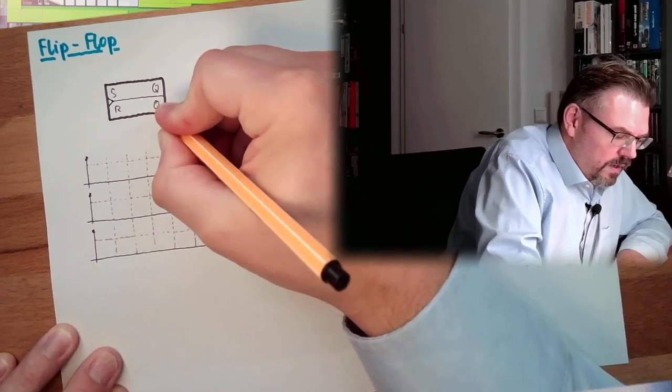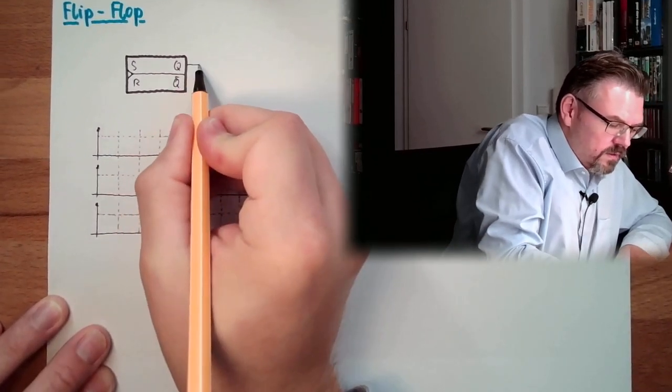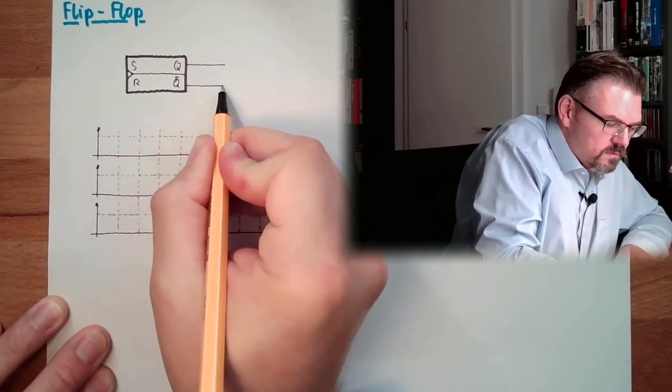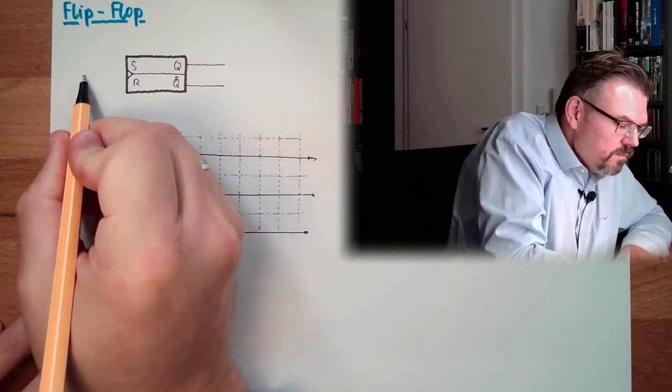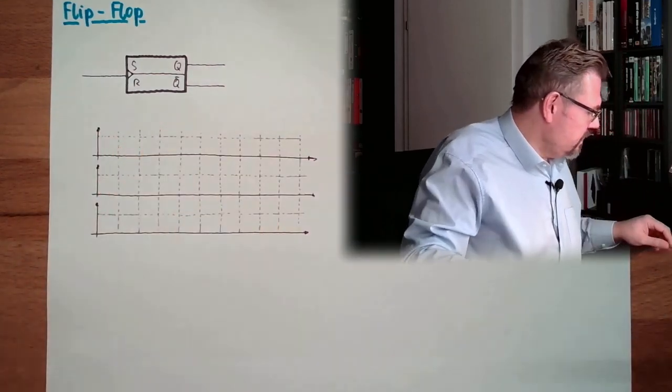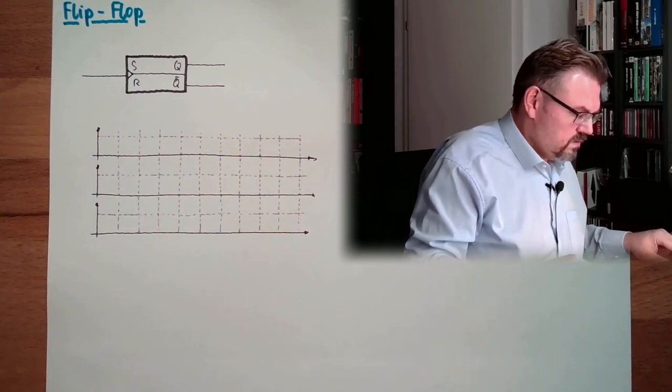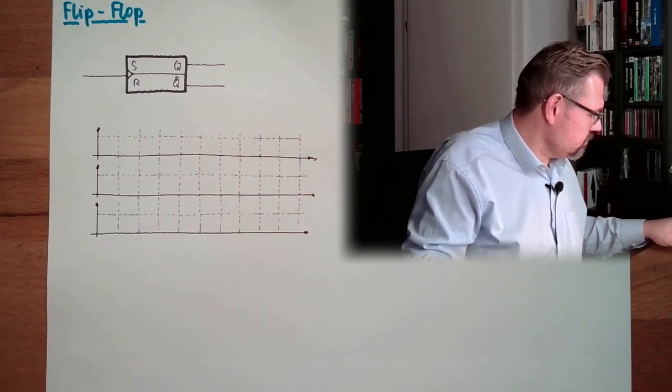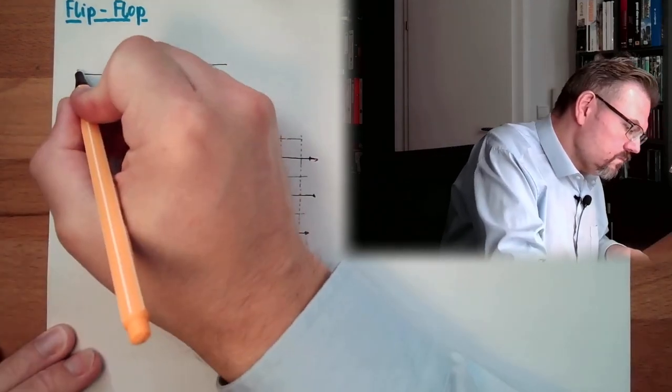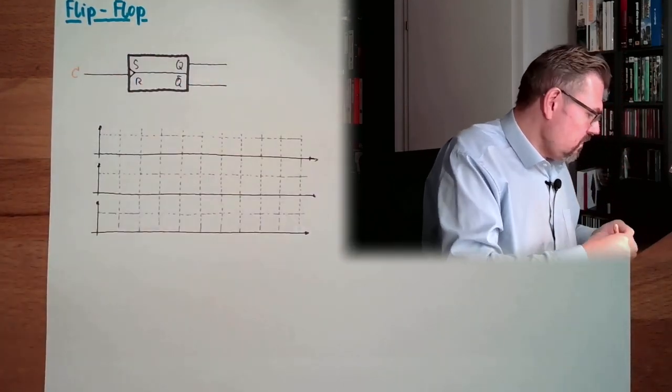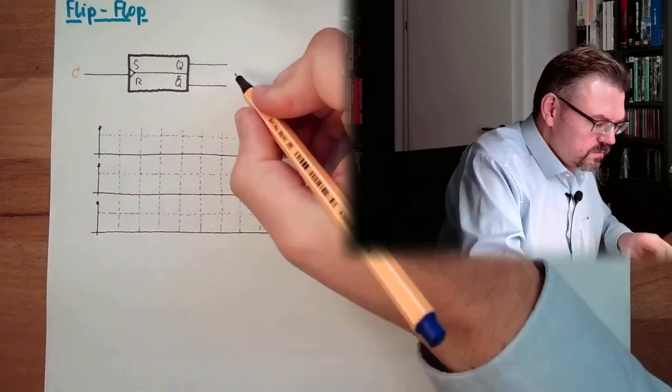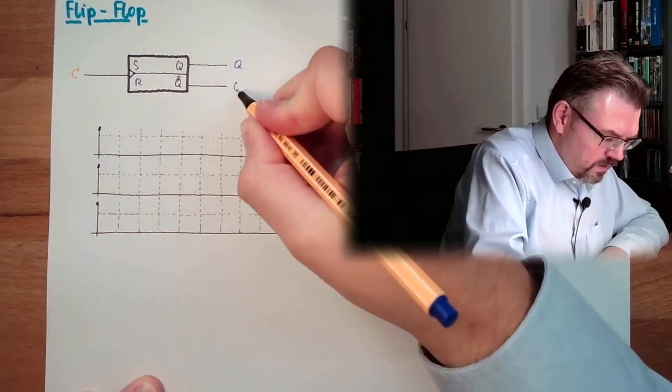Then we had the trigger input. Then we had here the S and the R resulting in a Q and not Q line. So here are the outputs. Here is the input. This here is C line. And this is Q and not Q.